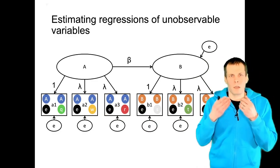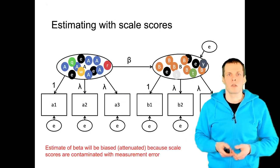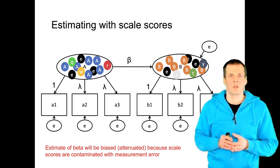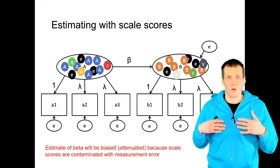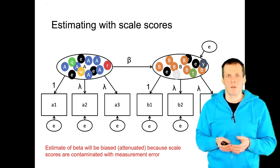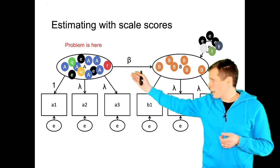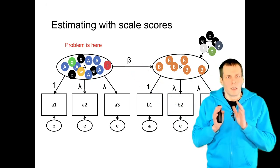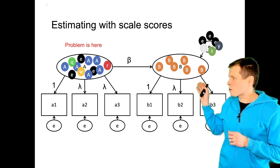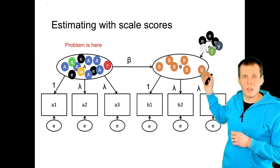The first technique we learn when working with these models is to take some of the indicators and run a regression analysis. The problem with regression analysis of scale scores is that if those scale scores are contaminated with measurement error — which they pretty much always are — then the regression coefficients will be inconsistent and biased. The problem is really the measurement error of the independent variable. The measurement error of the dependent variable is not problematic because it's assumed to be uncorrelated with the factors, so it just goes to the error term.